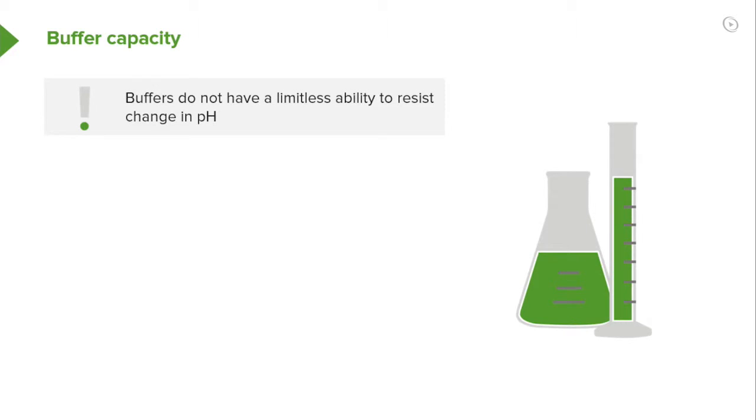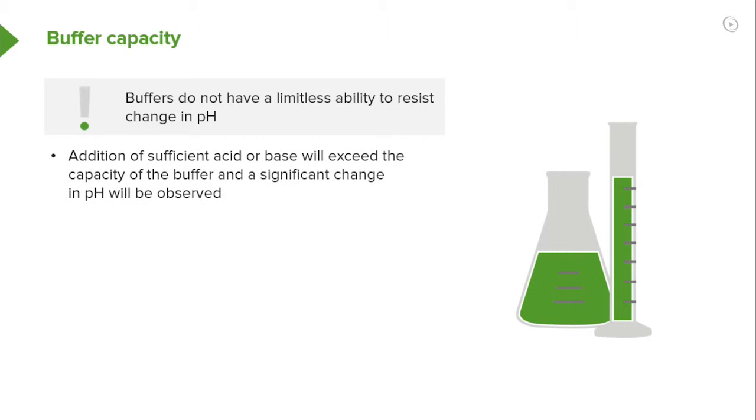Buffers do not have a limitless ability to resist change in pH. Addition of sufficient acid or base will overcome the buffering capacity of a solution, and a change in pH will be observed. This will happen before one of the buffer components is completely changed to the other.